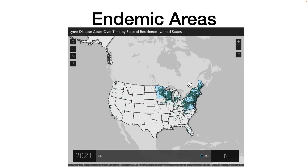Lyme disease, which Borrelia burgdorferi causes, is endemic to certain areas. This map from 2021 shows where cases appear in the United States, and as you can see, it's the northeastern U.S. and then north central Wisconsin, Michigan, and Minnesota — where the insect vector is common in the United States.